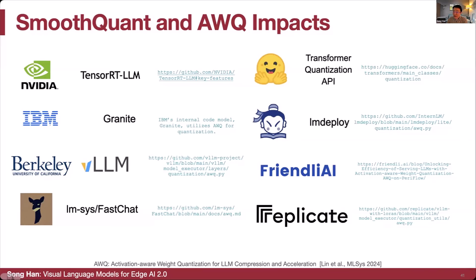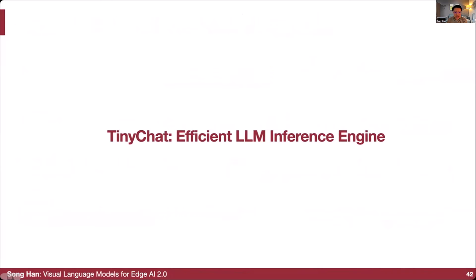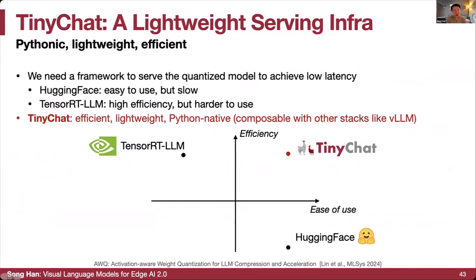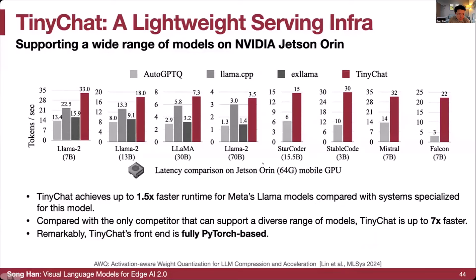Now we have the VILA model and the compression and quantization technique. Let's deploy them using TinyChat, which is an efficient LLM inference engine on the edge. TinyChat is a lightweight serving infrastructure based on Python. Hugging Face is easy to use but slow; TensorRT-LLM has high efficiency but is harder to use as a C++ based system. TinyChat is efficient, lightweight, Python-native, and composable with other stacks. TinyChat achieves up to 1.5 times faster for LLaMA models compared with other systems on Jetson Orin.